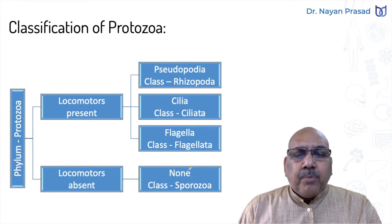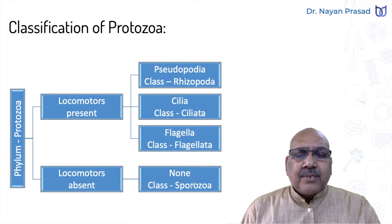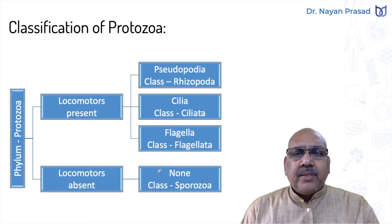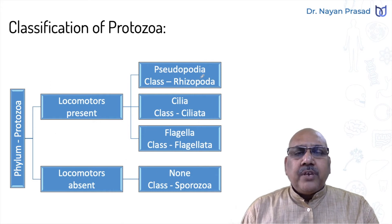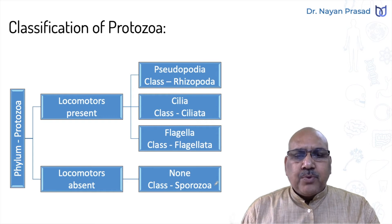The protozoans with no locomotory structures are all kept under class Sporozoa. Thus, in phylum Protozoa, we see four main classes: Rhizopoda, Ciliata, Flagellata, and Sporozoa.